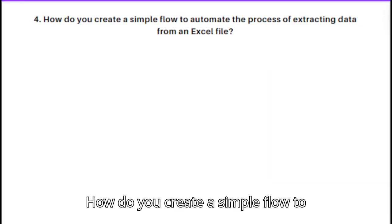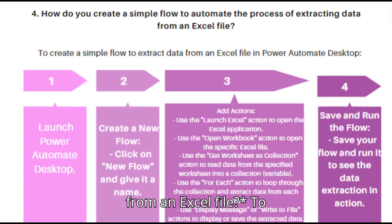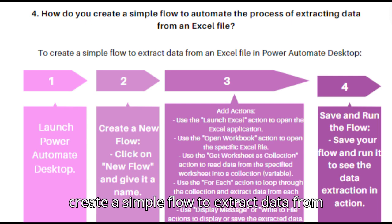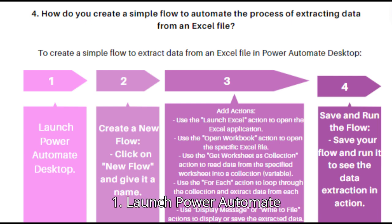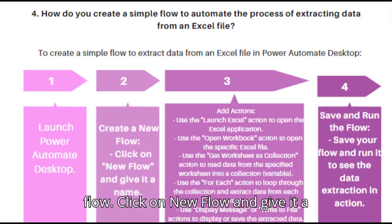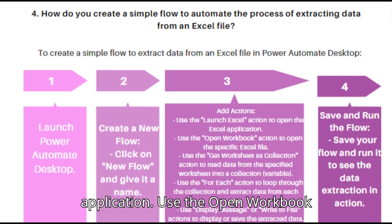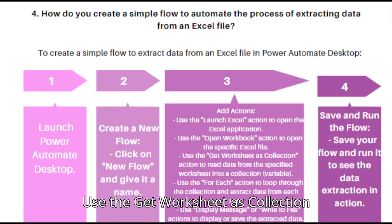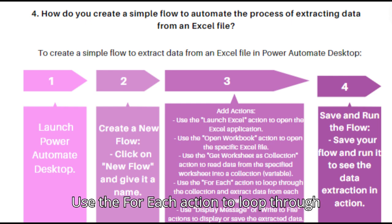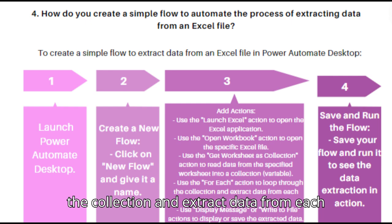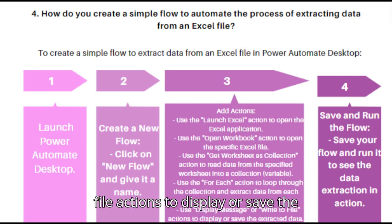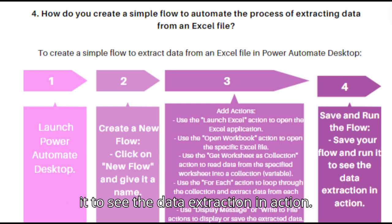Question 4: How do you create a simple flow to automate the process of extracting data from an Excel file? To create a simple flow: 1. Launch Power Automate Desktop. 2. Create a new flow and give it a name. 3. Add actions: use the launch Excel action to open the application, use the open workbook action to open the file, use get worksheet as collection to read data into a collection variable, use the for each action to loop through the collection and extract data from each row, and use display message or write to file actions to display or save the extracted data. 4. Save and run the flow.